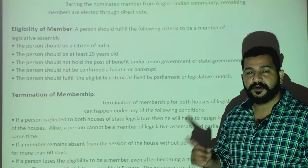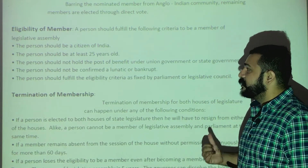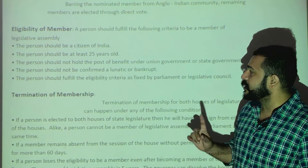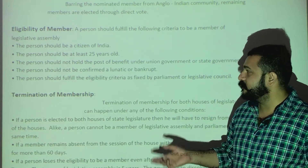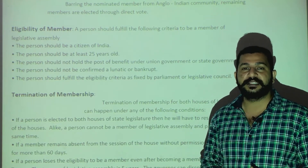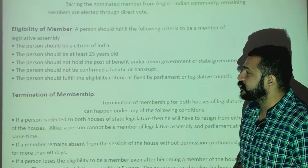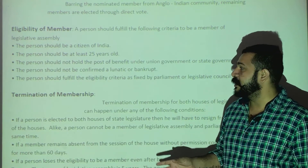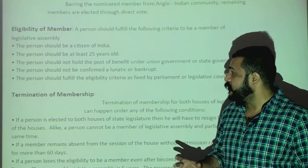A person who wants to become a Legislative Assembly member should not be employed in any post under the union or state government. The fourth point: the person should not be declared bankrupt or insolvent. The last point: the person should fulfill the eligibility criteria as fixed by parliament and the legislative council.